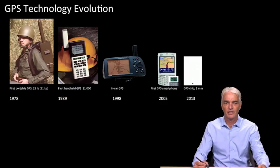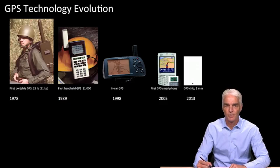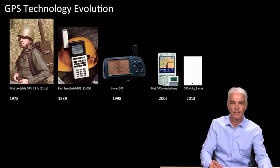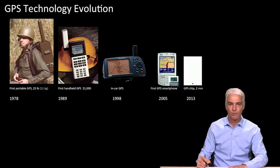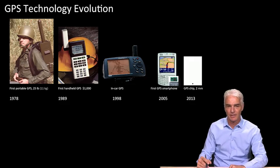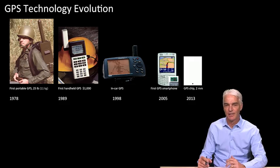So let's take a look at the technology evolution of GPS. GPS began, the system began over 30 years ago. And in 1978, we had the first portable GPS receiver, which wasn't very portable. You see it there—25 pounds backpack, 11 kilograms. That was just a GPS receiver. And then 1989, about a decade later, you had the first commercial handheld receiver that cost $1,000. There it is, made by Magellan. And then through the 90s, we saw the proliferation of in-car nav systems. Maybe you owned one.